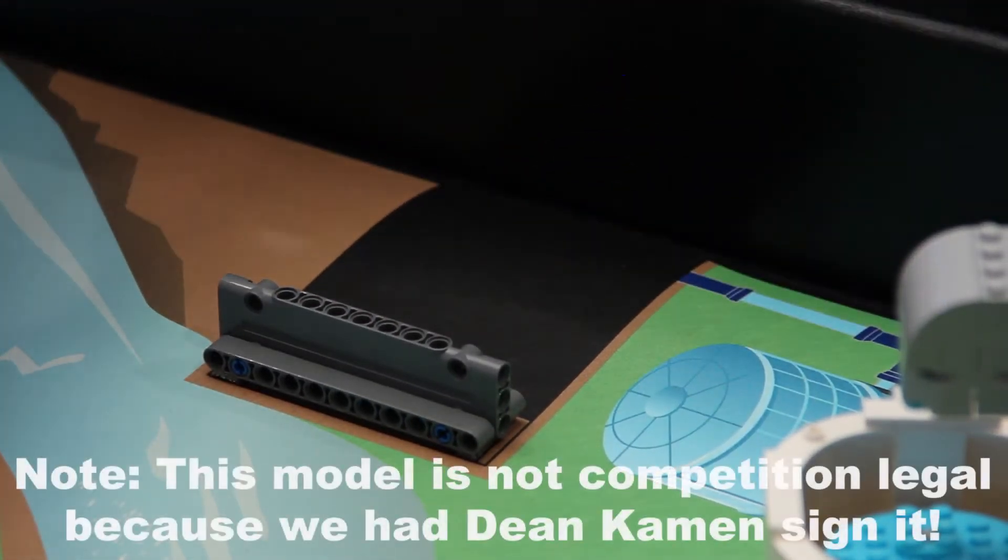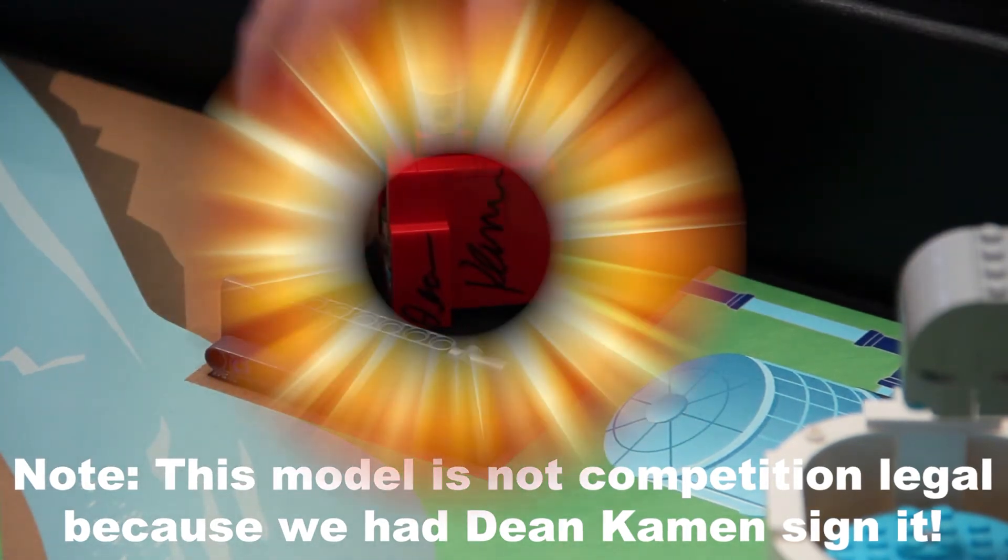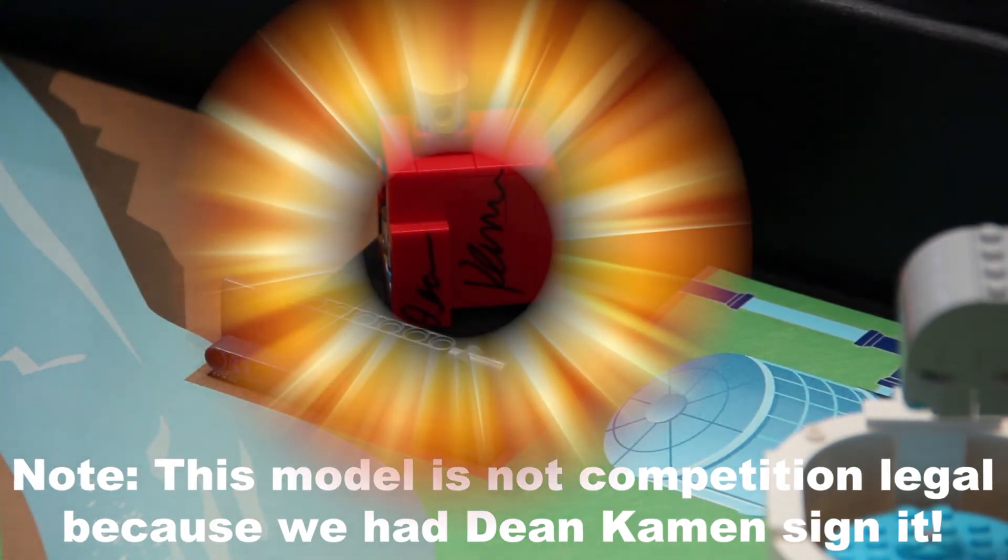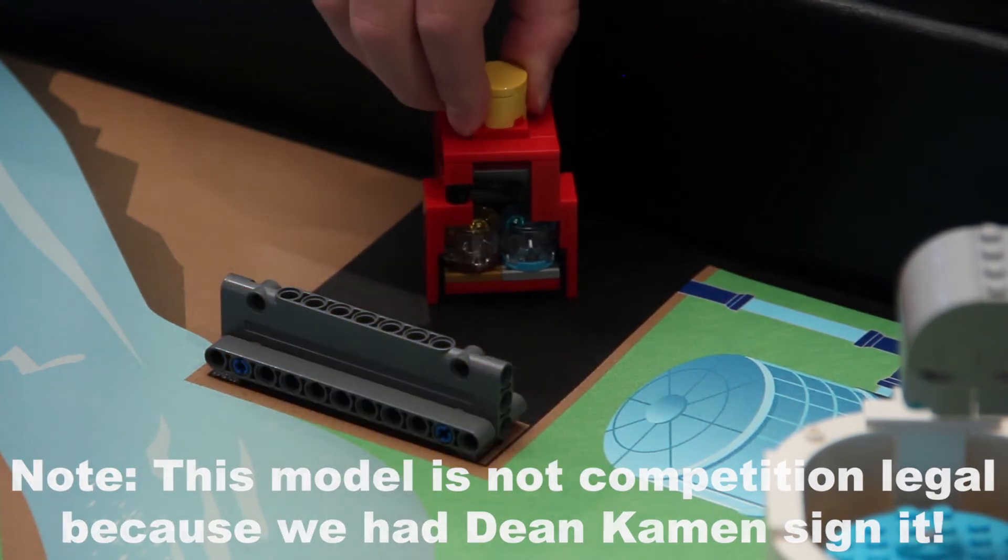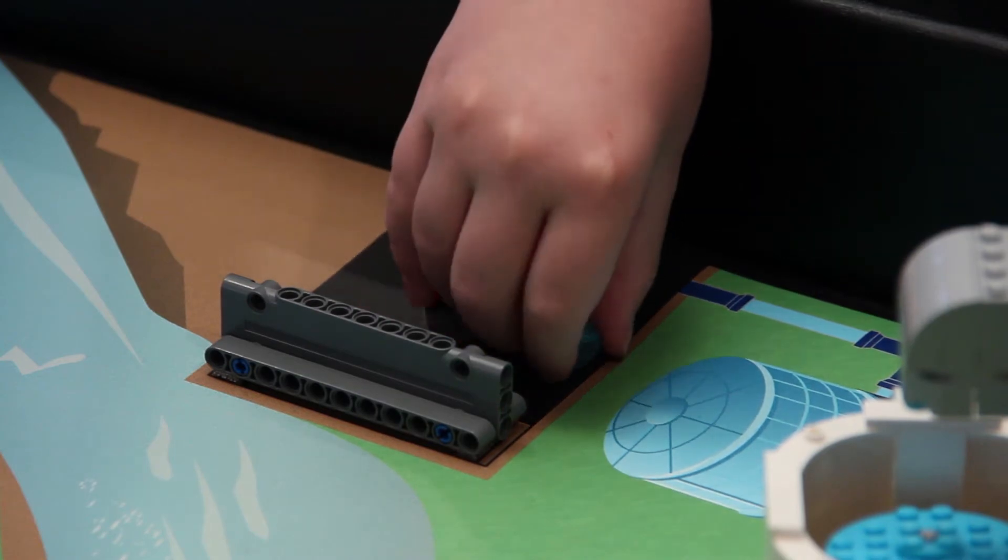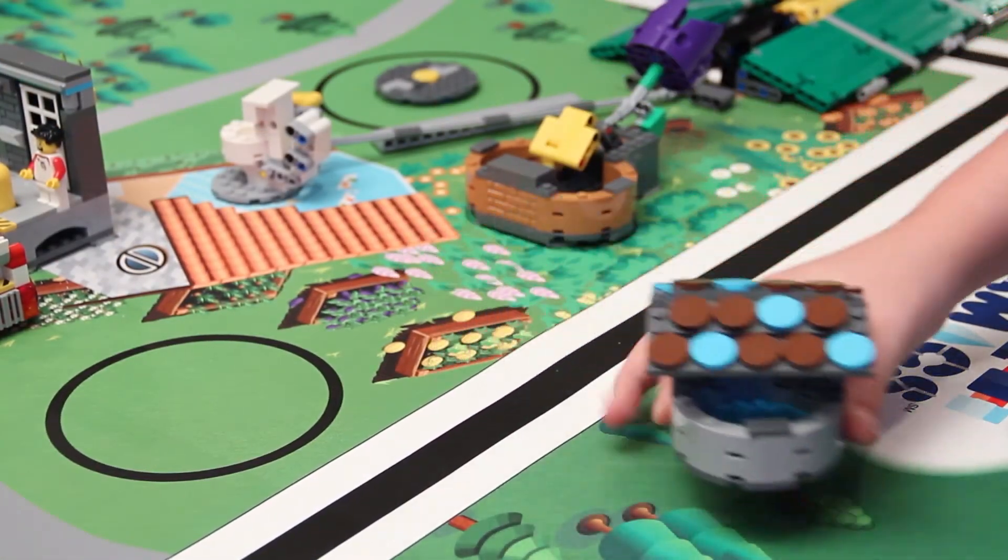This is the slingshot model and this is the slingshot target. Our guess is that you have to deliver the slingshot into the slingshot target. We also think that you might get extra points if you eject the water.